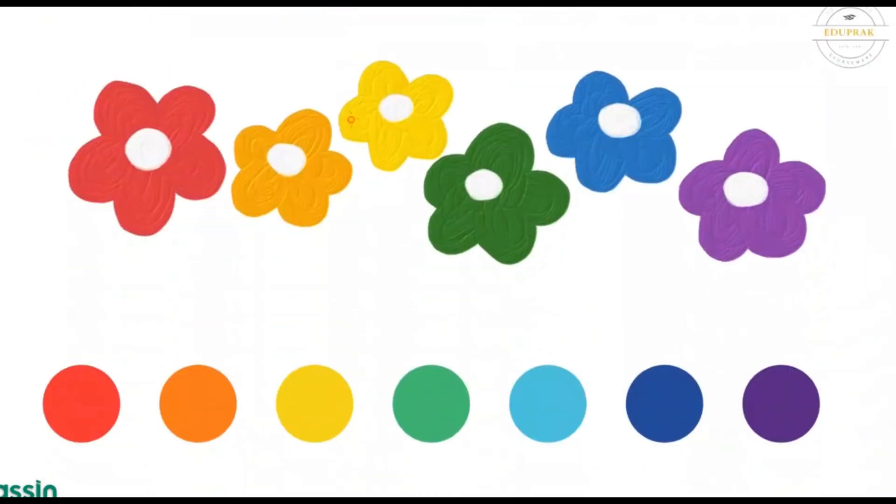Let's look at this picture here. We have a few colorful flowers and a few colorful dots. Which has more than? Good, very well done! There are more dots than there are flowers, which means that there are fewer flowers than there are dots.